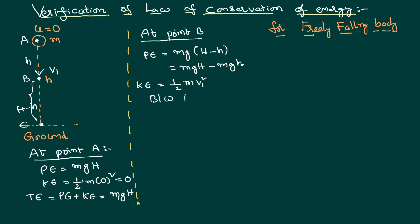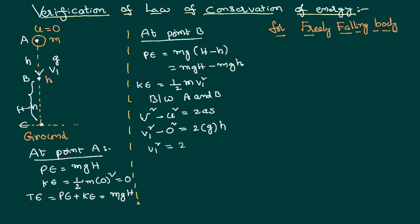Considering points A and B, I will write the equation of motion: V² minus U² equals 2AS. By the time it reaches point B it has acquired velocity V1, so V1² equals zero plus 2 times g times h — because acceleration due to gravity is positive as the body moves downward, and S equals h. Therefore V1² equals 2gh. Substituting into the kinetic energy equation: kinetic energy equals half M times 2gh, which equals MGh.